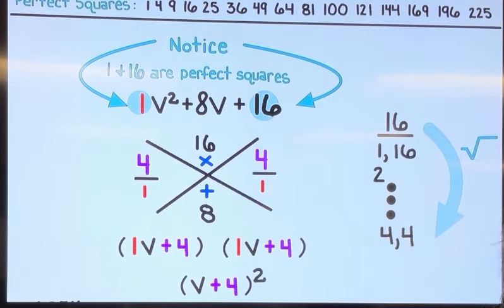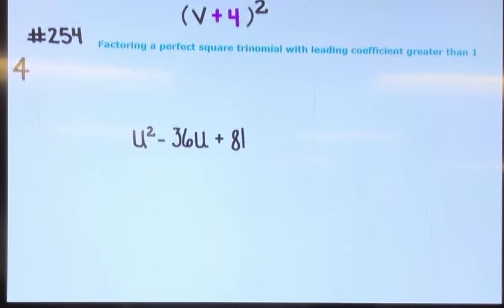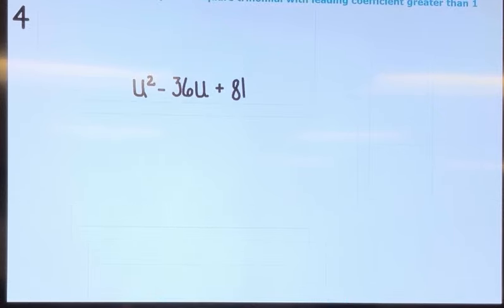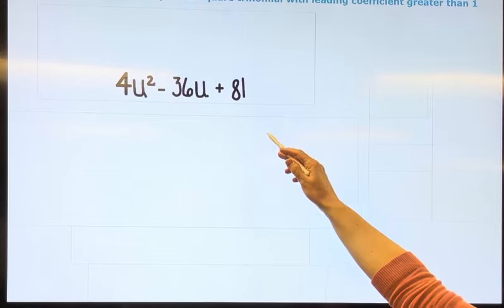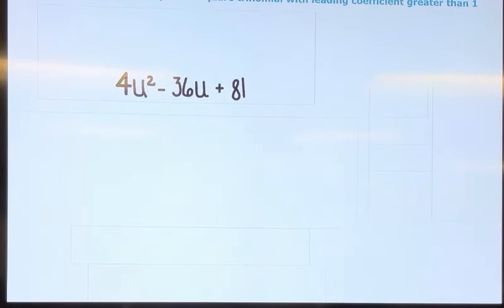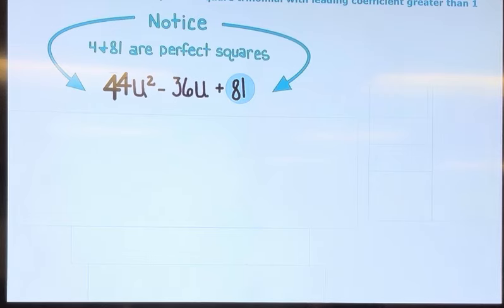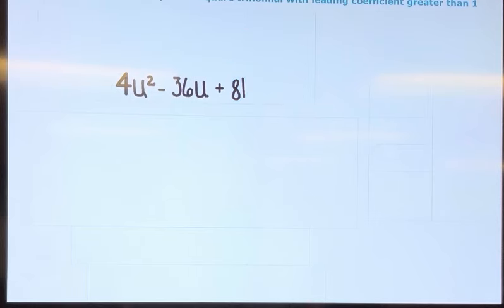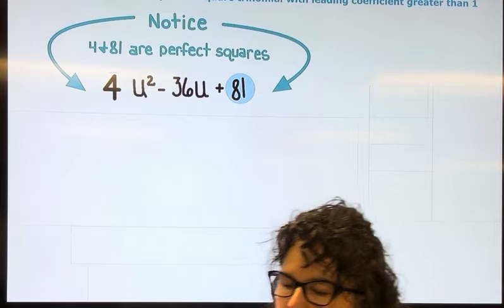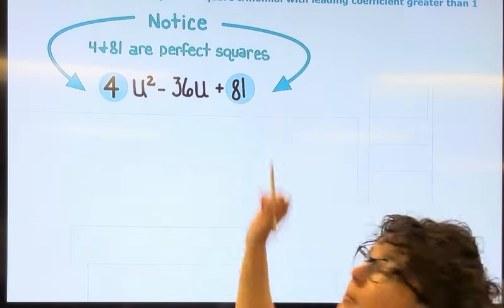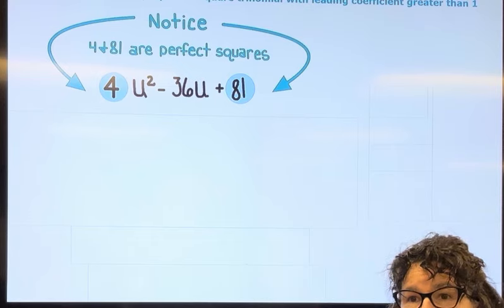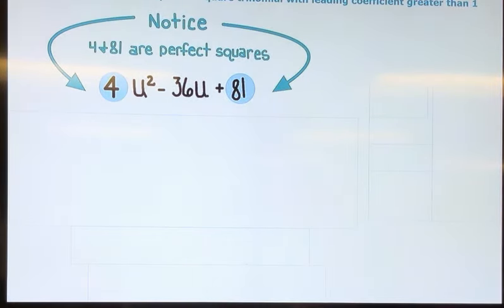So then let's do one more with some numbers that are just a little bit bigger. Let's say my original is 4u squared minus 36u plus 81. If you notice right away that the number in the front and the number in the back are both perfect squares, 2 times 2 is 4, 9 times 9 is 81, then the brainstorming is going to go a lot faster.